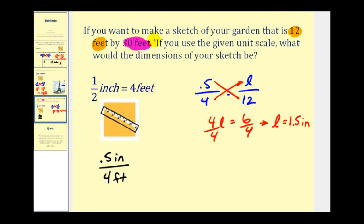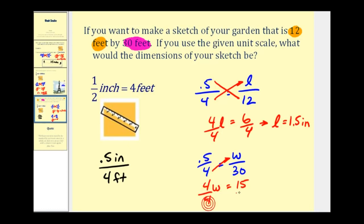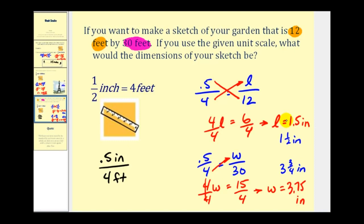Now we'll do the same for thirty feet. The unit scale is the same — point five to four must equal the width divided by thirty feet. Again, we're comparing inches to feet, inches to feet. Performing cross products: four W equals point five times thirty, which is fifteen. Dividing by four, W equals fifteen divided by four, that's three and three fourths, or three point seven five inches. So the scaled dimensions would be one and a half inches by three and three fourths inches.